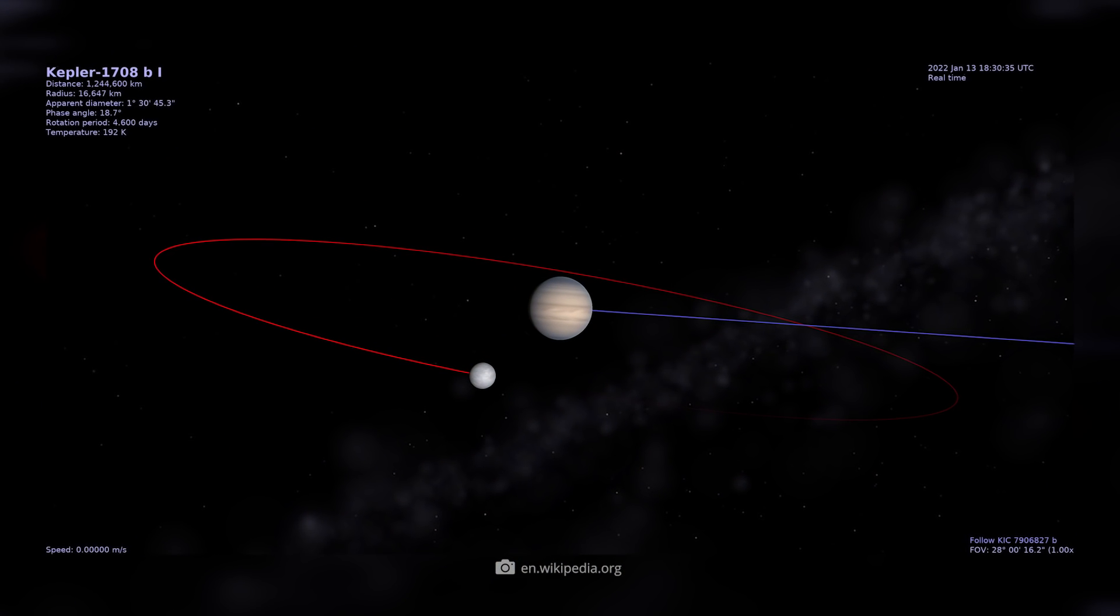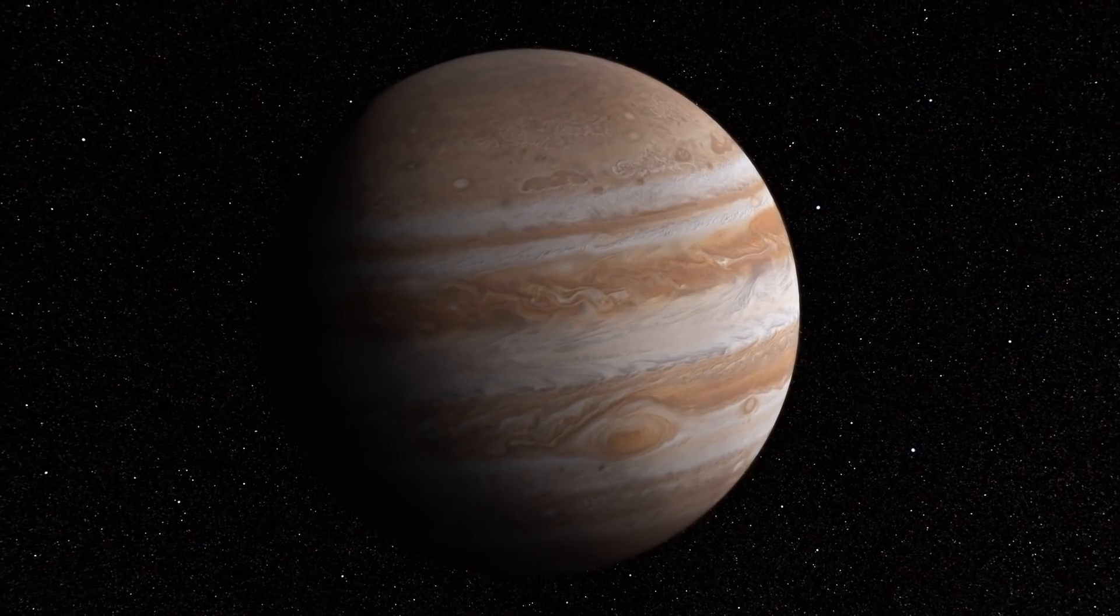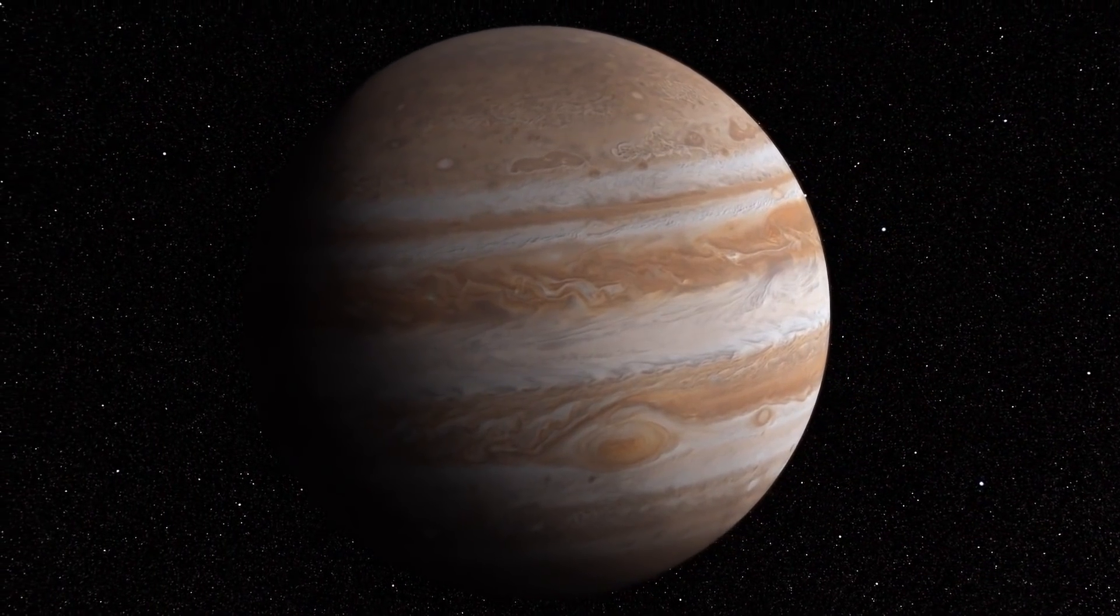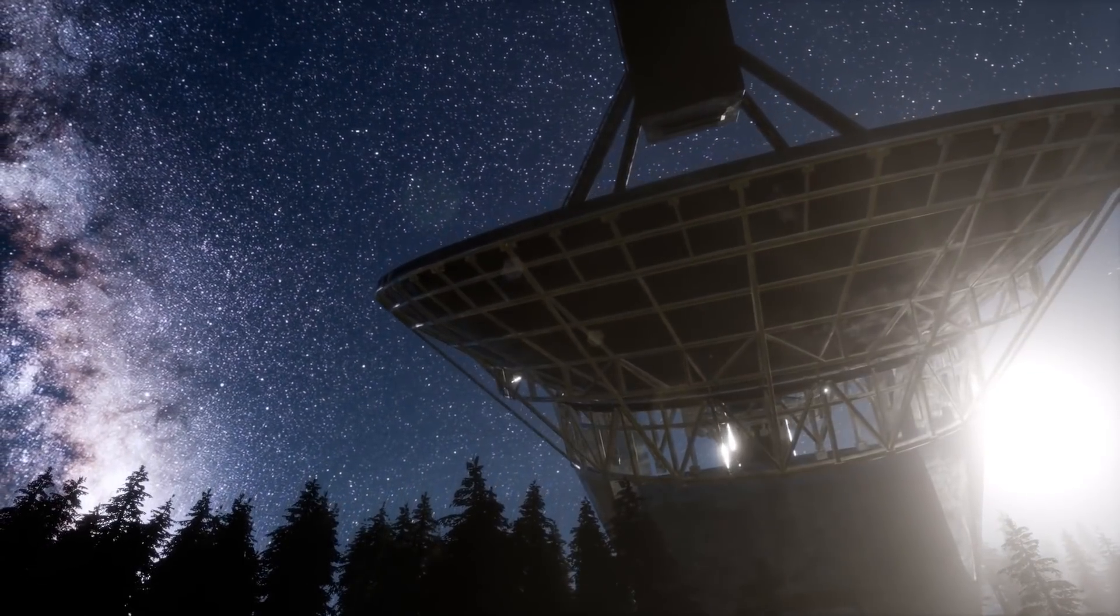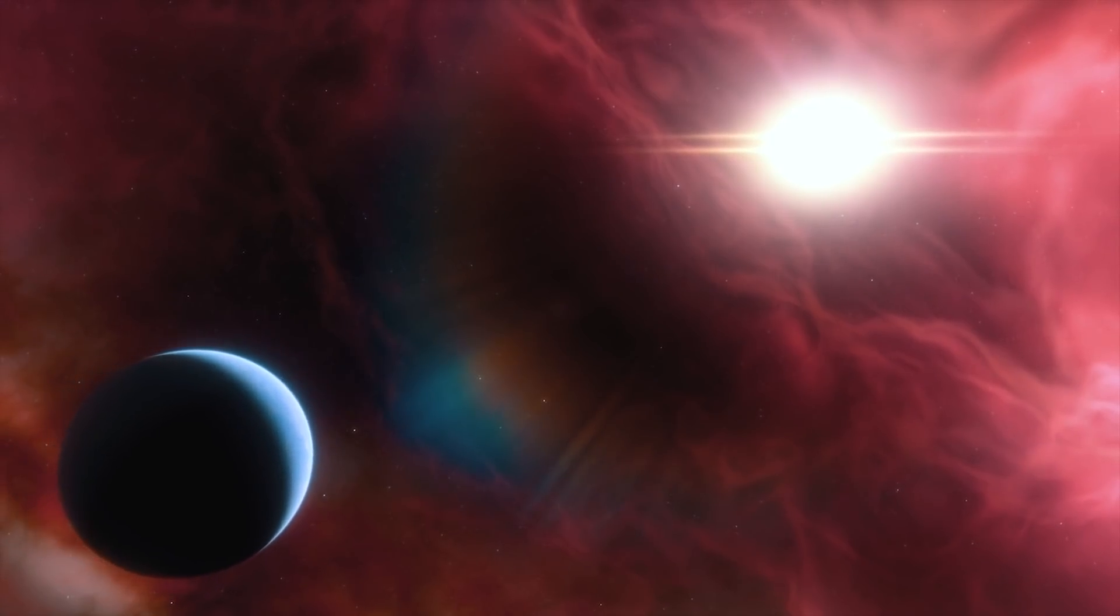This time, it was the exoplanet Kepler-1708b, 5,500 light-years away, and the size of Jupiter, which aroused the interest of researchers. In this case, too, it was conspicuous features in the light curve that suggested the presence of a natural satellite.